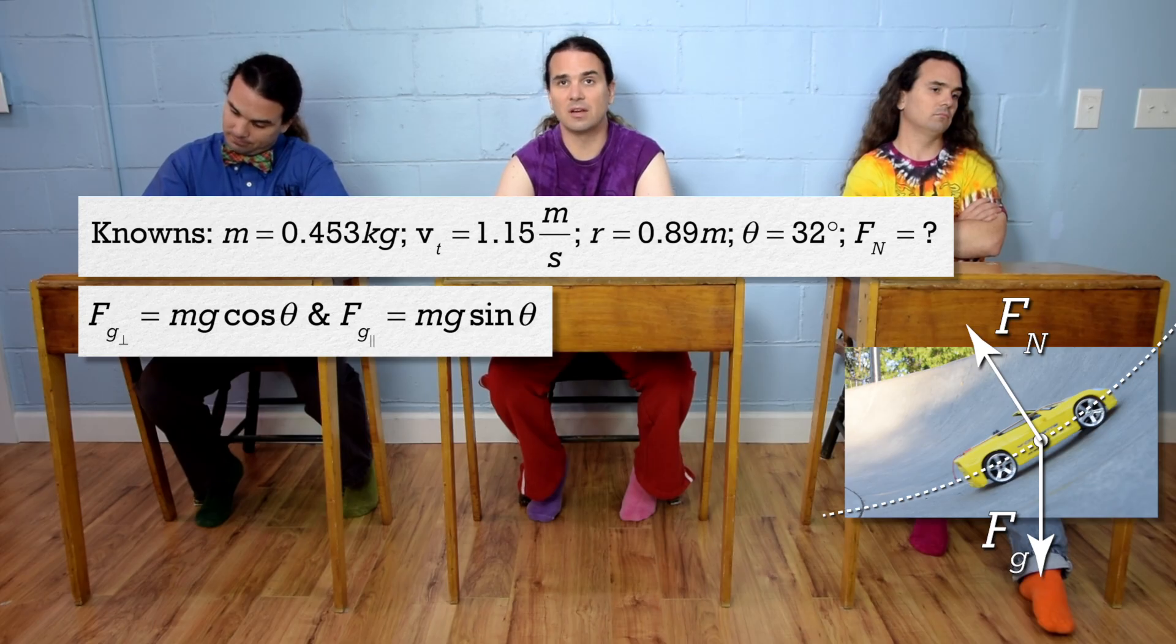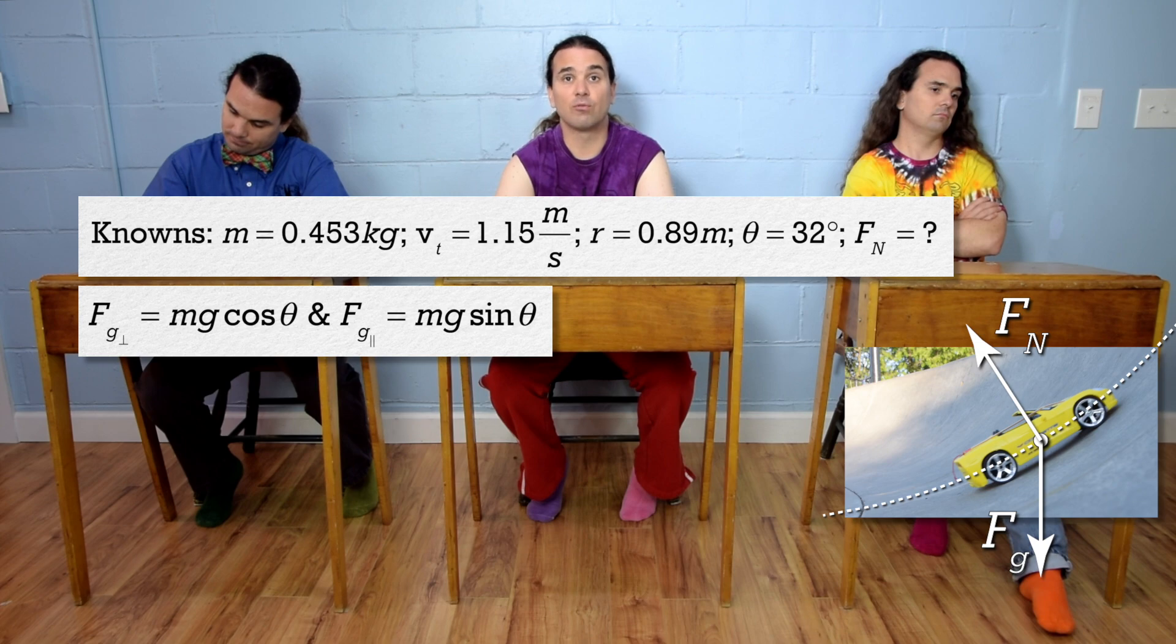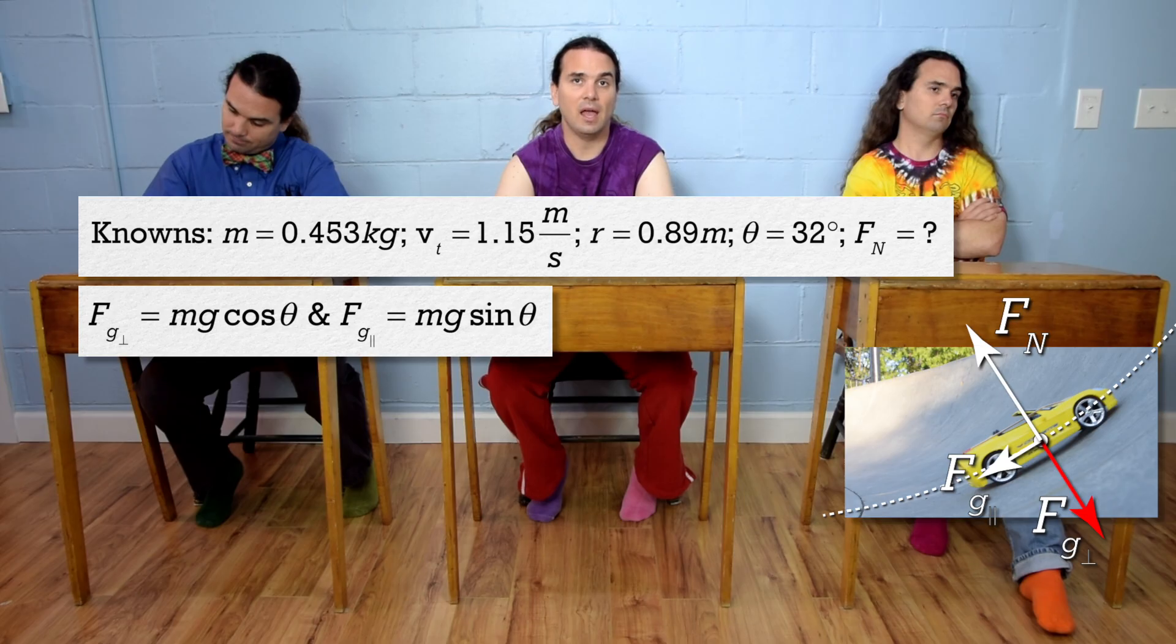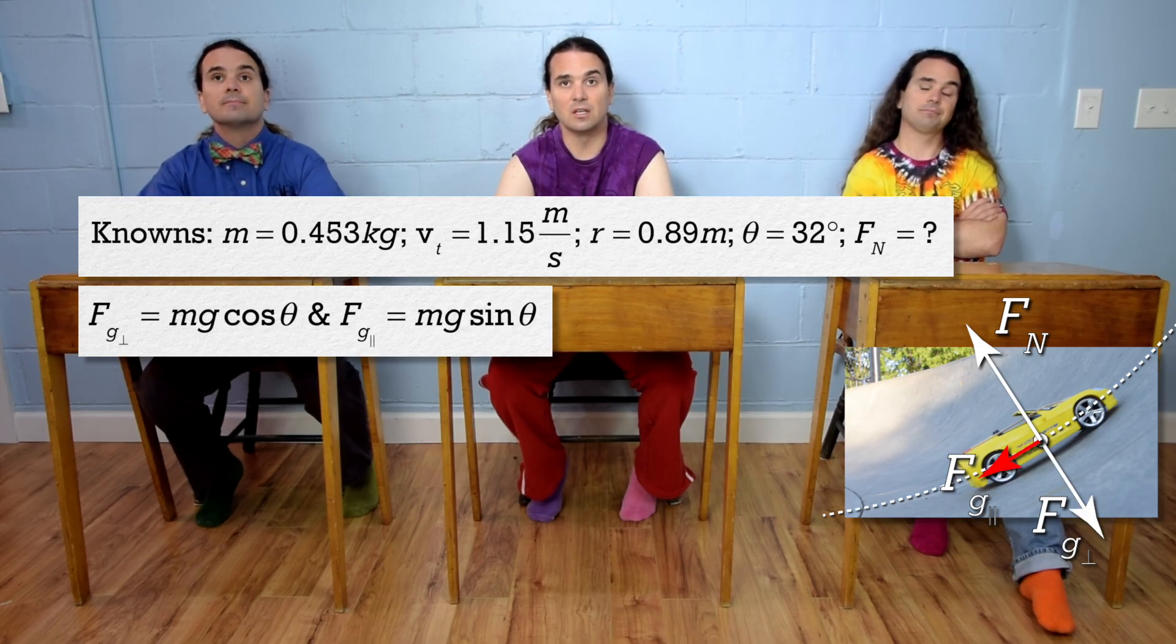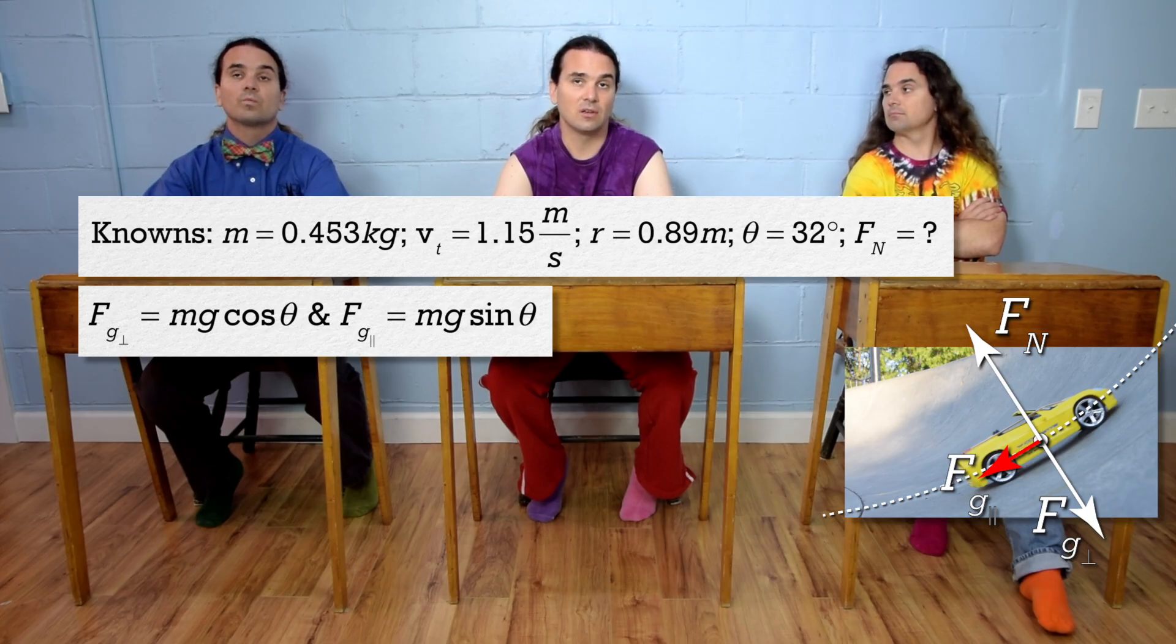The force normal is still there, but now we have the force of gravity perpendicular, which is in the out direction, and the force of gravity parallel, which is in the tangential direction and down.